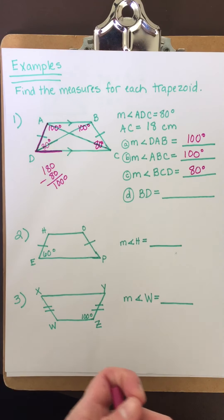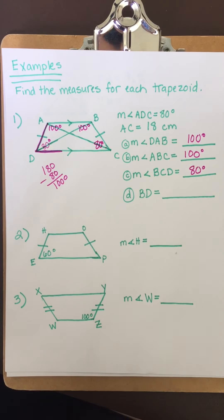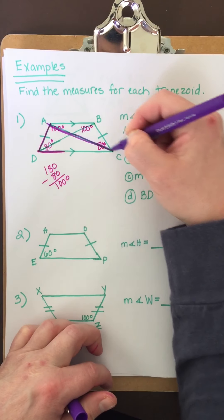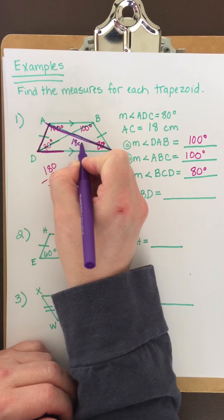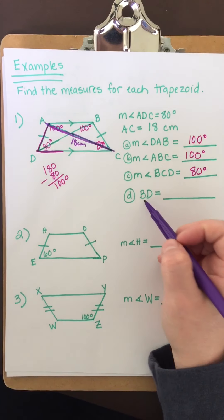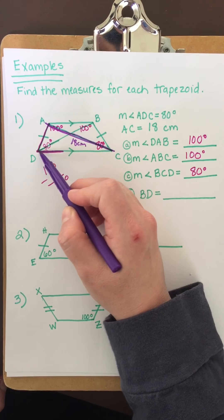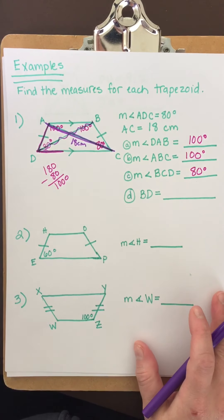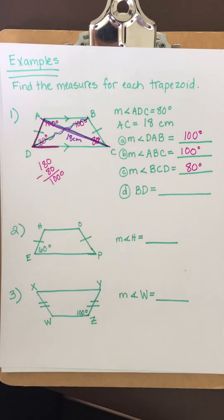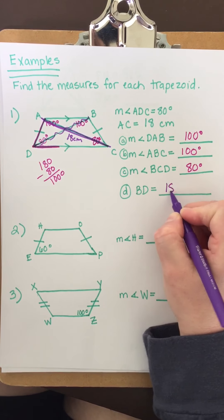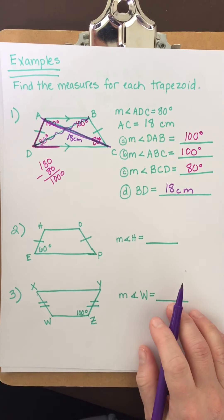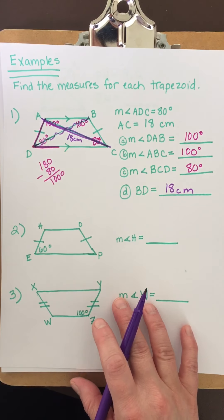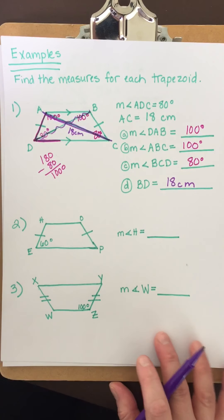It also tells me that AC is 18 centimeters — that's this diagonal right here — and it wants to know what BD is. What did we learn about the diagonals of an isosceles trapezoid? They are equal. So if AC is 18 centimeters, then BD must also be 18 centimeters. This example had everything together; now we'll look at a few addressing each part separately.